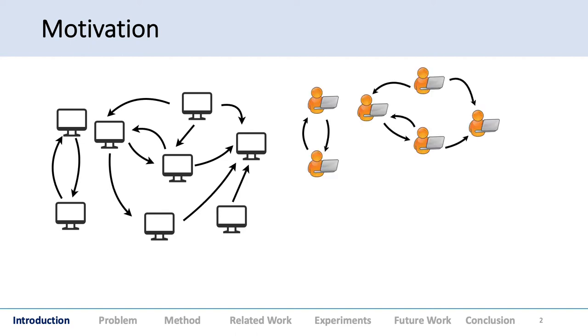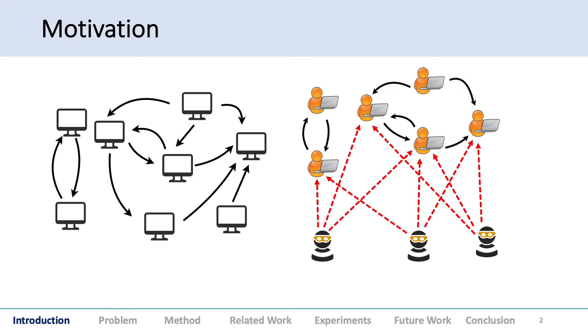For example, suppose these are all normal nodes communicating in the system. Suddenly three malicious entities come in and send various requests within a short span of time. We want to detect this group behavior where these entities are attacking the system.